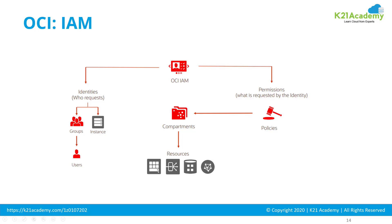As part of Identity Access Management, you protect resources by putting them together into a compartment — a logical collection of resources — and then applying appropriate policies that dictate who can do what on those resources. For example, you put all your network resources into a network compartment and give administrative privileges to the network group on that compartment.